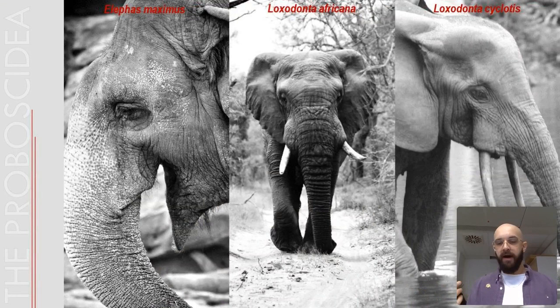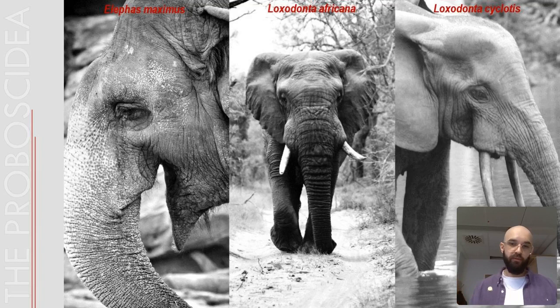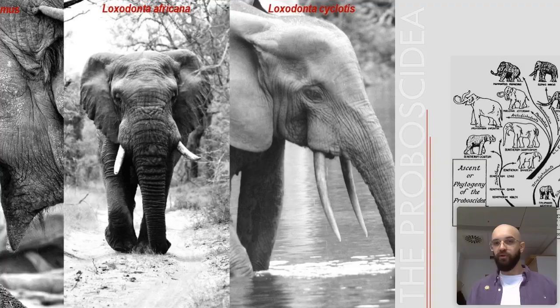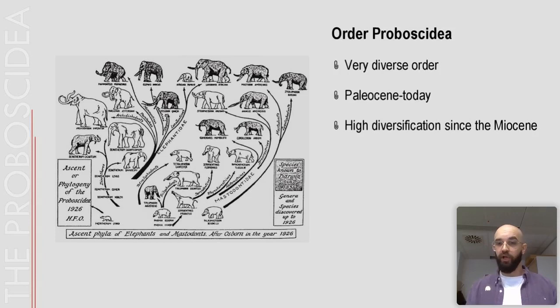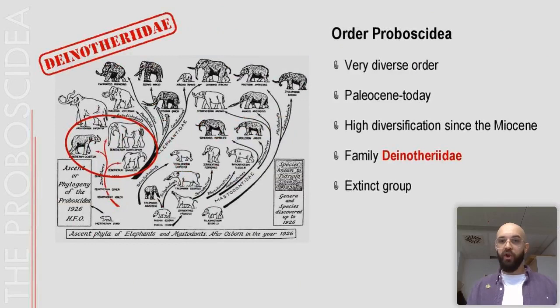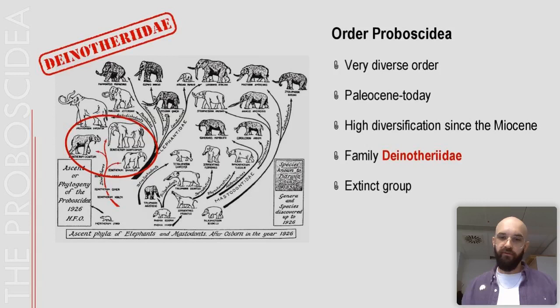Proboscidians today are represented by three modern taxa: the Indian elephant, the African bush elephant, and the smaller African forest elephant. However, even though we have only three representatives today, the order Proboscidea is considered very diverse, chronologically expanding from the Palaeocene to today, showing high diversification since the Miocene. That was the time when a peculiar group appeared — the family Dinotheridae — an extinct group which appeared in European palaeoenvironments in the early Miocene and went extinct at the end of the latest Miocene.